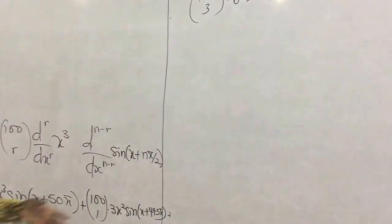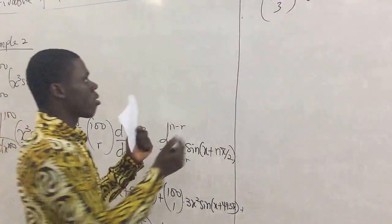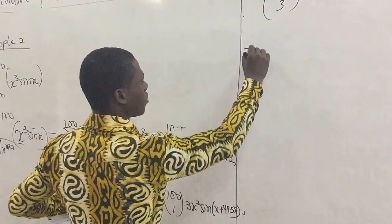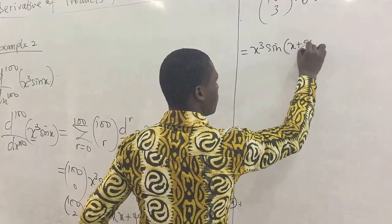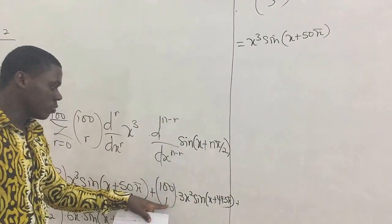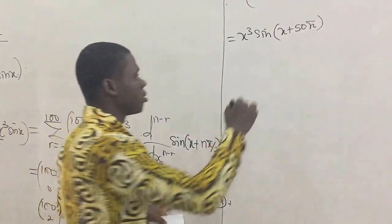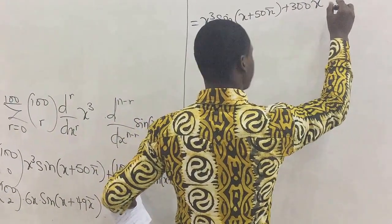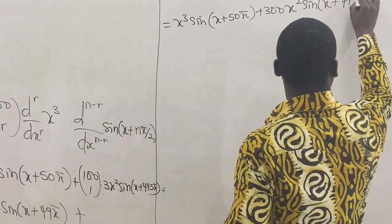So what is left, we'll simplify this so that it looks simple. So 100 combination 0 is 1, multiplying all this, so we have x cubed sine x plus 50 pi. So we multiply. Now we come here, 100 combination 1 is 100, and multiply by 3, so we have 300. So plus 300 x squared sine x plus 49.5 pi.